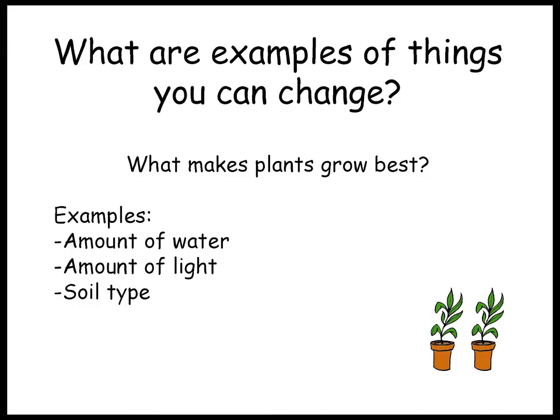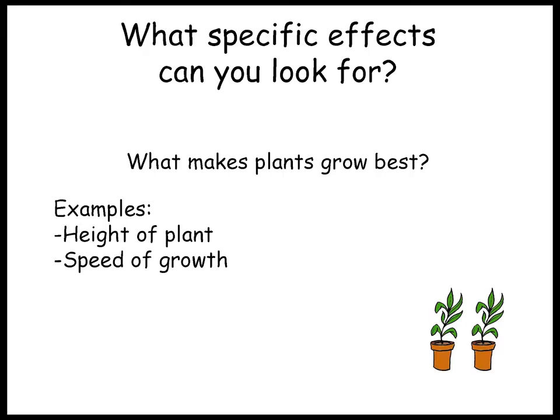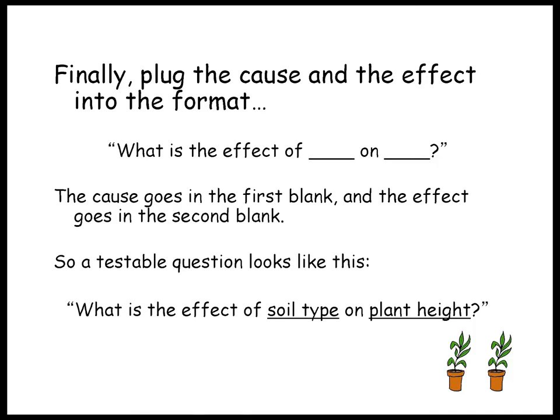Additionally, the shape of a flower pot or the temperature the plant is in are things you can change. If you make those changes, what specific effects can you look for? Examples: the height of the plant might change, the speed of growth might change, the number of fruit the plant produces might change, or the number of leaves might change. Finally, plug the cause and the effect into the format: What is the effect of blank on blank? The cause goes in the first blank and the effect goes in the second blank. A testable question looks like this: What is the effect of soil type on plant height? The cause is soil type — the thing you are going to change. The effect is plant height — you will see how tall the plant grows.